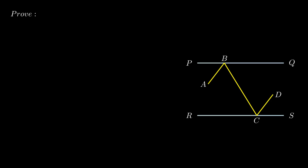Moving on to the last problem. PQ and RS are two parallel mirrors. An incident ray AB strikes mirror PQ at point B; the reflected ray moves along path BC and strikes mirror RS at point C, then reflects along path CD. We need to prove that incident ray AB is parallel to reflected ray CD. We construct normals BM and CN at points B and C respectively.